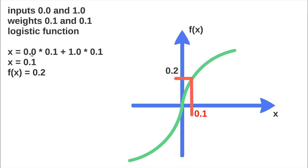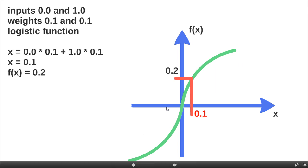We have this equation here resulting in 0.1. Then we use the logistic function. By inputting this value 0.1, we have the output 0.2. So the result of this activation function is 0.2.